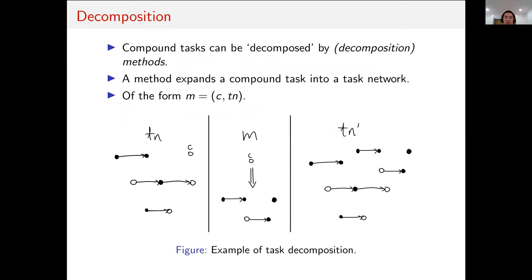Compound tasks, as we mentioned, can be refined or decomposed by methods. A method expands the compound task into another task network, instead of tasks with a partial order. As we see in this diagram, we have the task network on the left, TN, and the compound task labeled C. A method in the middle describes how C decomposes into another task network. Then if we decompose C with M, we basically replace C with the task network in M to get a new task network, TN'.